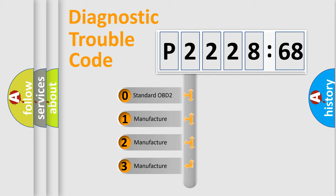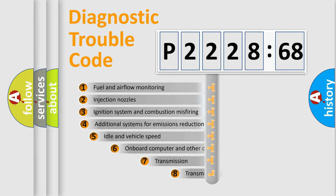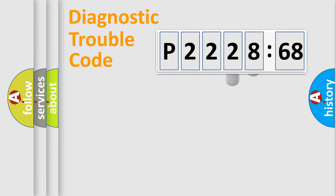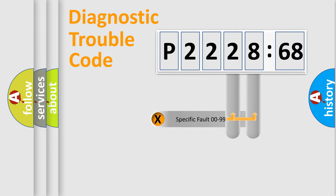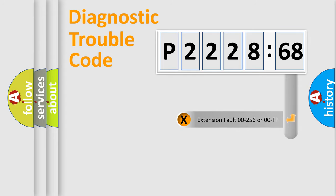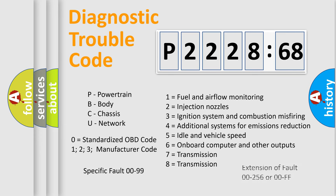If the second character is expressed as zero, it is a standardized error. In the case of numbers 1, 2, or 3, it is a more specific expression of a car-specific error. The third character specifies a subset of errors — this distribution is valid only for the standardized DTC code. Only the last two characters define the specific fault of the group. The add-on to the error code serves to specify the status in more detail, for example, a short to ground. Such a division is valid only if the second character code is expressed by the number zero.